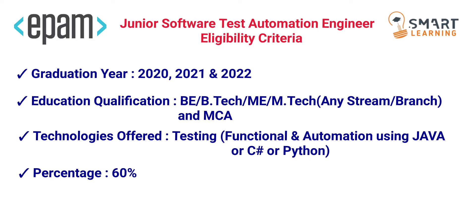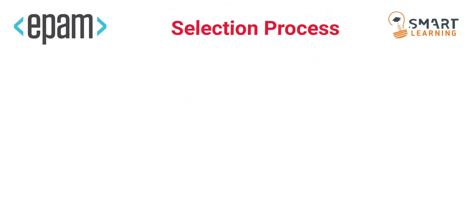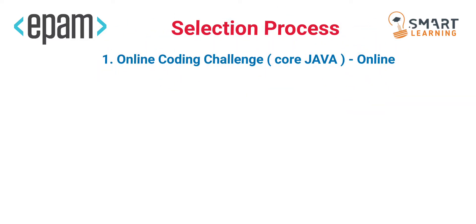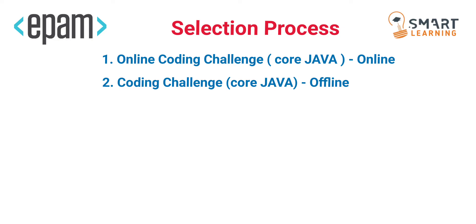Job location and training locations are the same as for the Software Engineer role. There will also be three months of training in Hyderabad, and CTC is also the same — 6 LPA plus standard benefits. Now coming to the selection process, which is the same for both roles. The first round is an online coding challenge based on core Java, conducted online. The second round is also a coding challenge based on core Java, but the mode of test will be offline.